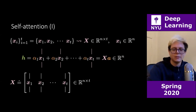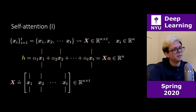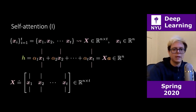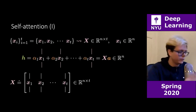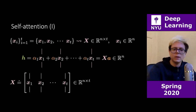So h = X * a. It's a bit different from usual — normally we think of the hidden representation as a rotation of the input by a weight matrix, but here it's the rotation by the attention coefficients. I prefer to think of it as a linear combination of the columns of X — a linear combination of those x's.